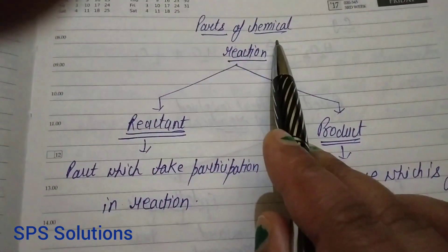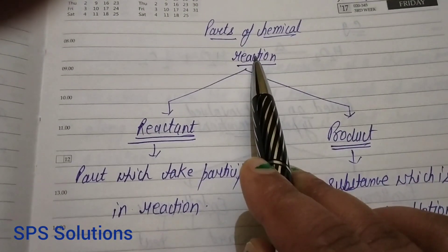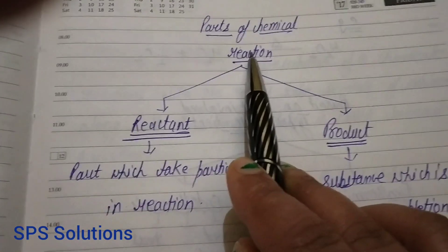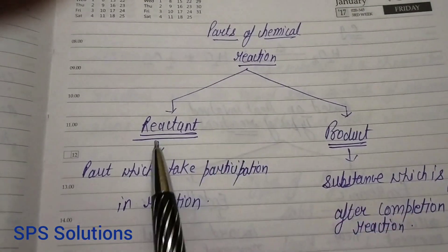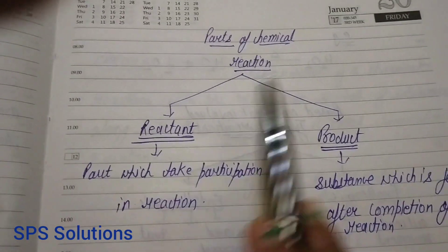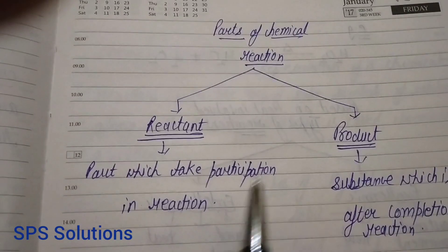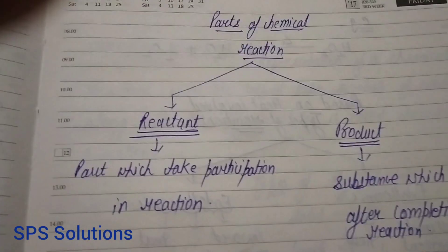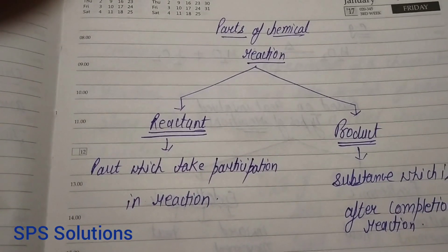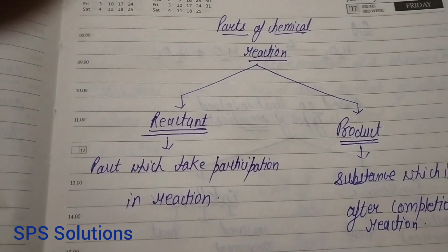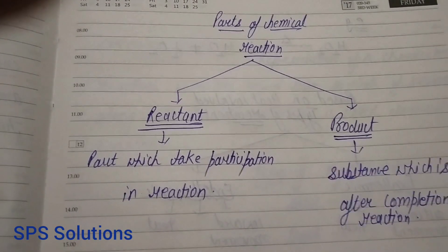The next topic is the parts of a chemical reaction. Whenever a chemical reaction takes place, how many parts are there in that reaction? Basically, in every reaction, there are two parts: the reactant part and the product part. We will discuss what a reactant is, what a product is, how to recognize each, how to designate them in the reaction, and where to write each part.